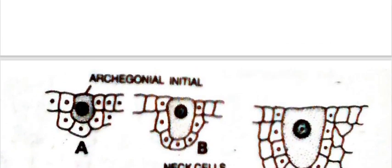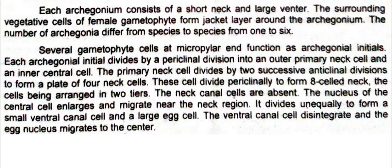How does development of the archegonium occur? In the female gametophyte toward the micropylar end, several cells function as archegonial initial cells. Each archegonial initial divides by periclinal division into two cells: the outer one is the primary neck cell and the inner one is the central cell. The primary neck cell divides by two successive anticlinal divisions, producing a plate of four neck cells. These four cells then divide periclinally and eight neck cells are produced, arranged in two tiers of four.